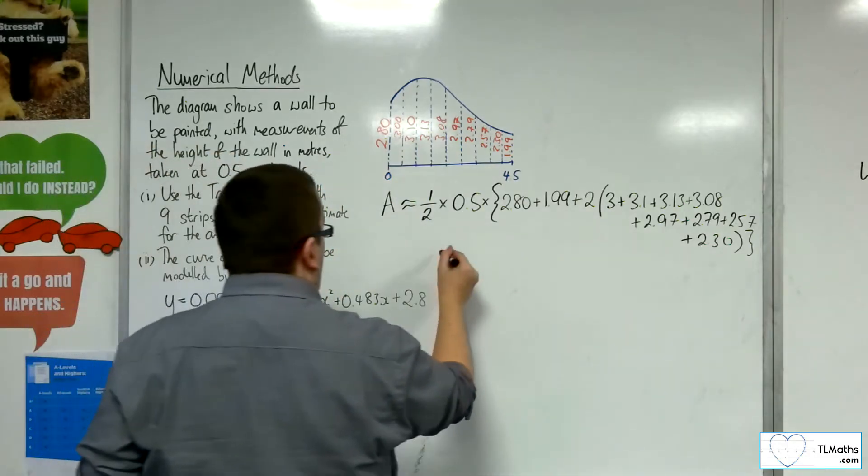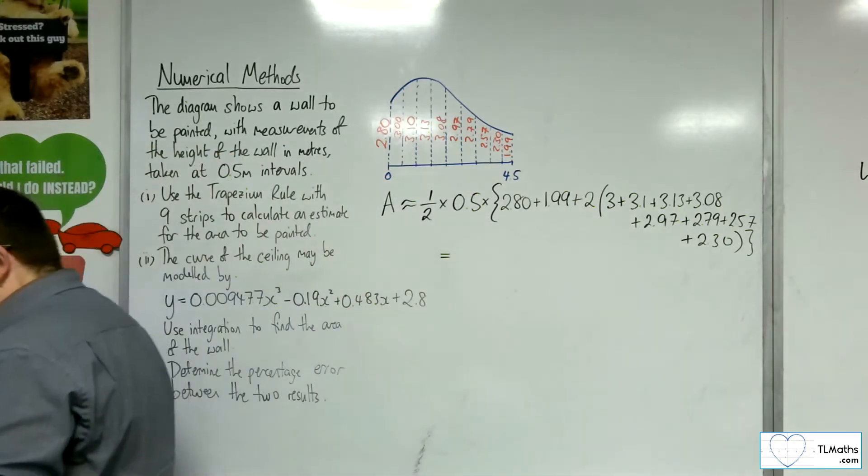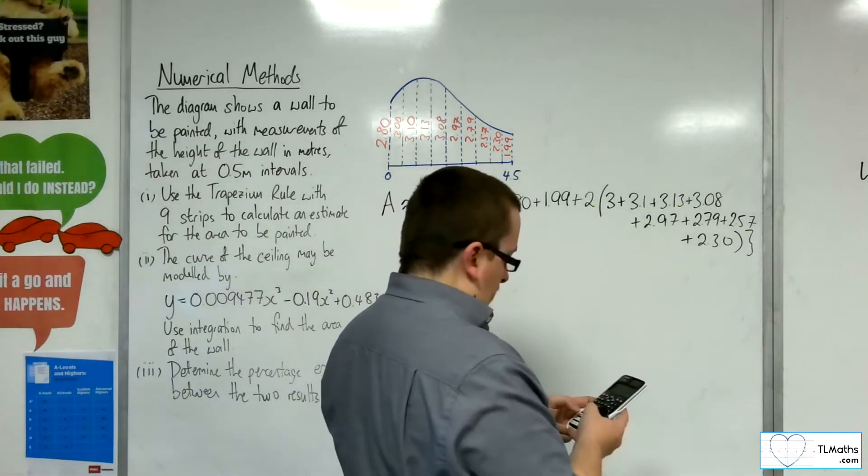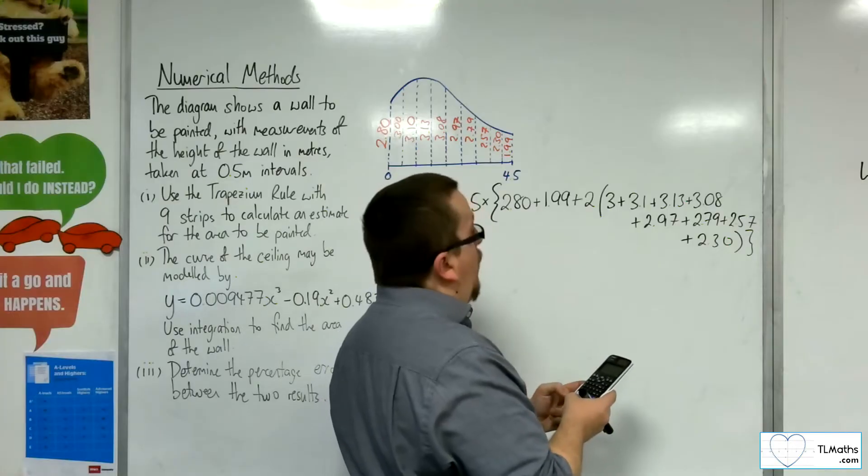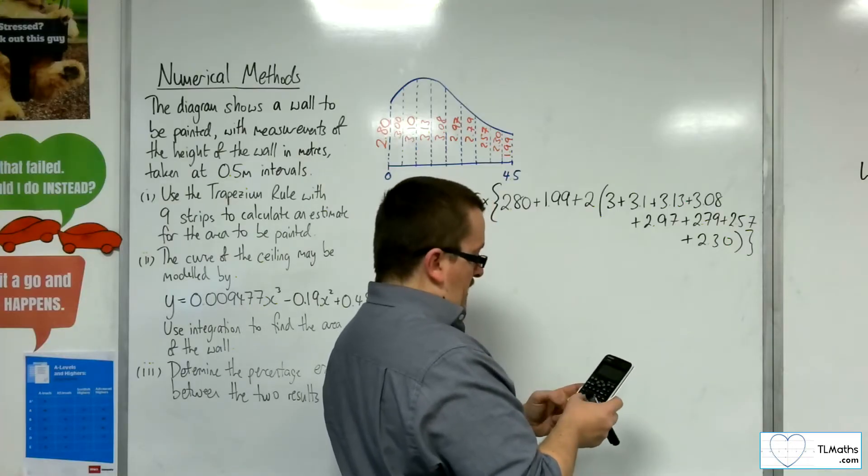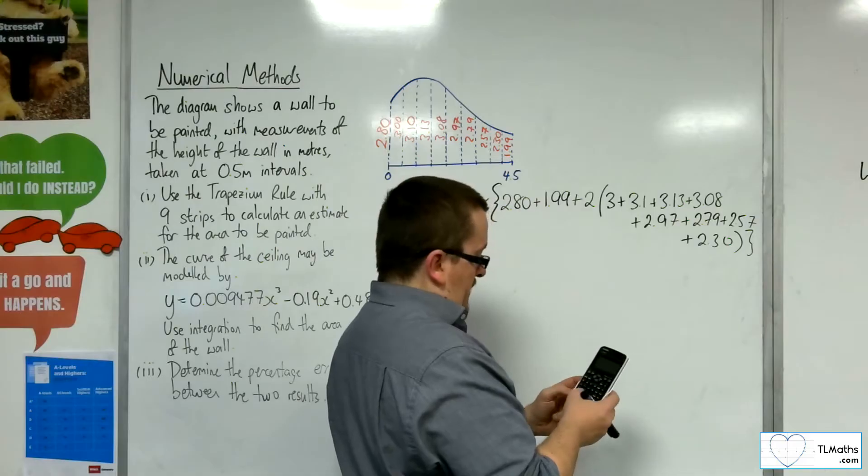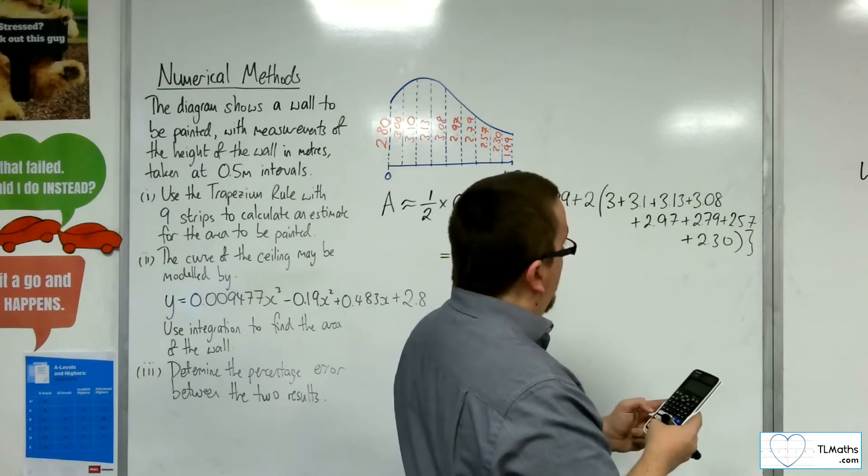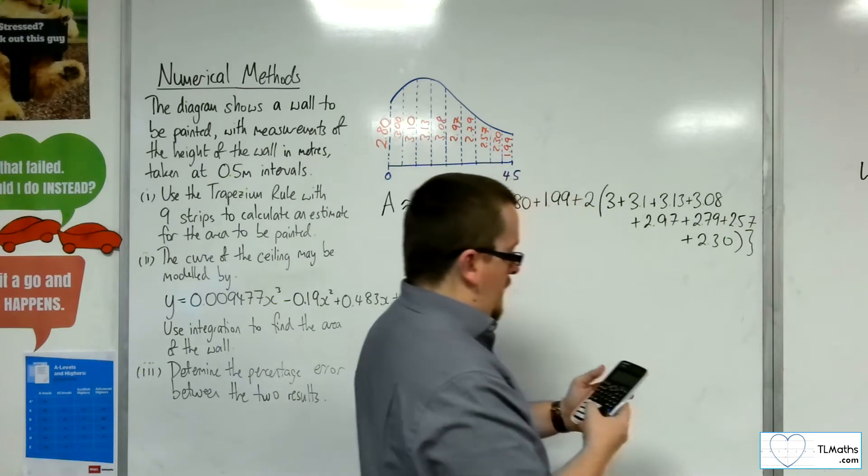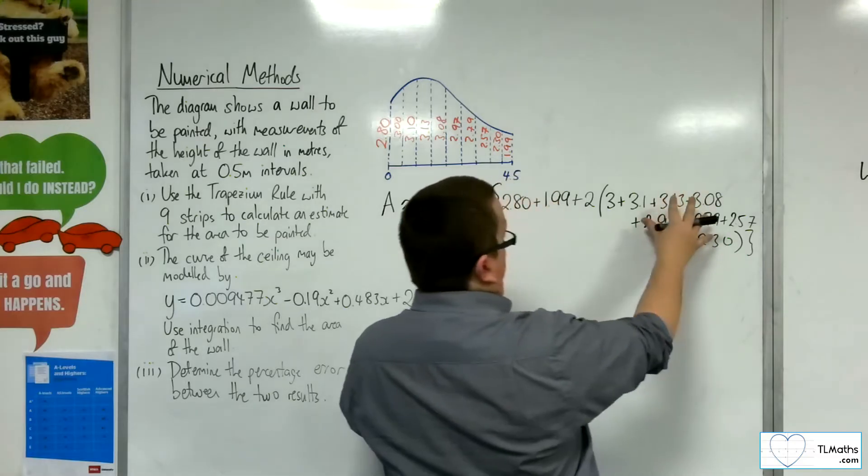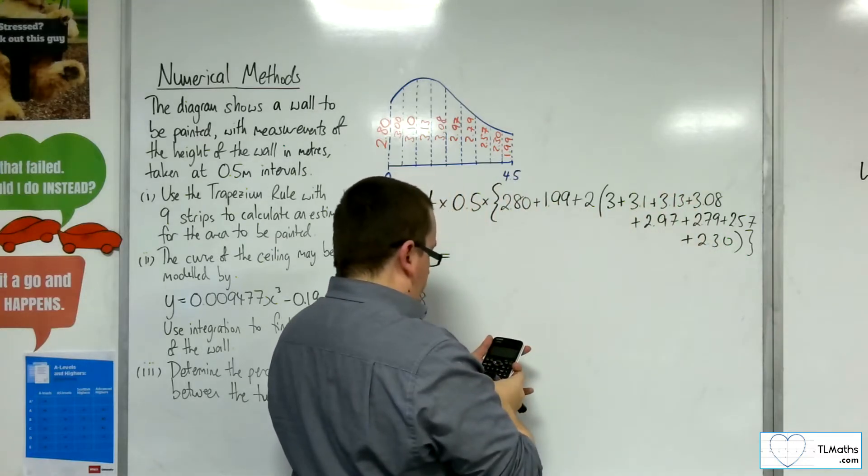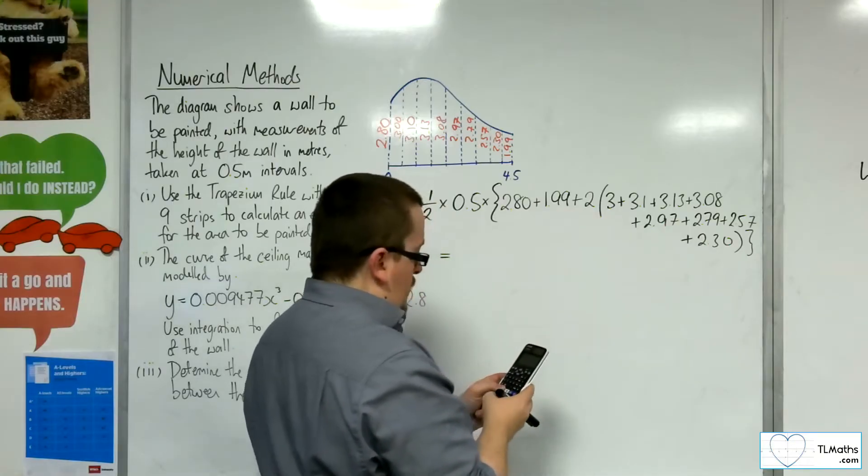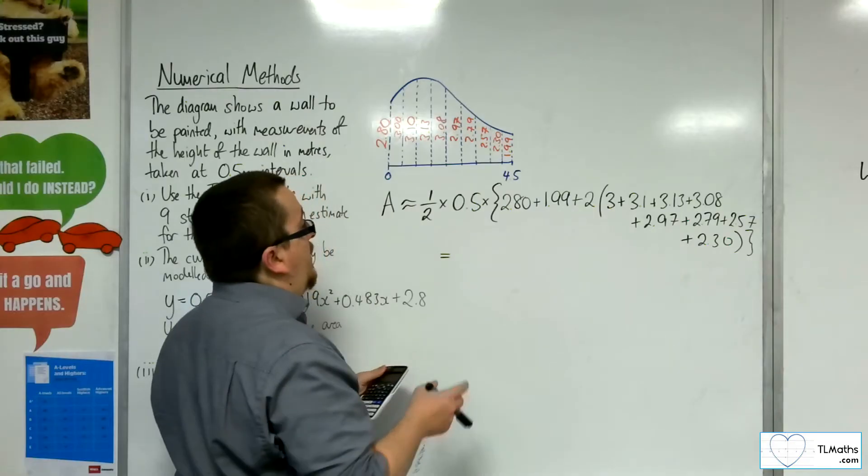So that's 22.94 for inside the bracket. Double it. Add on the 1.99 and the 2.80. So that gets us 50.67.